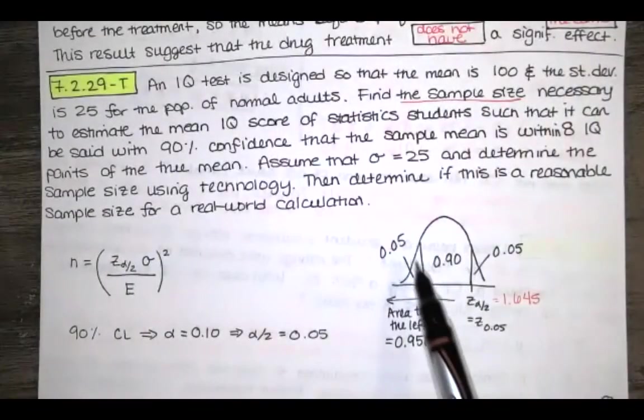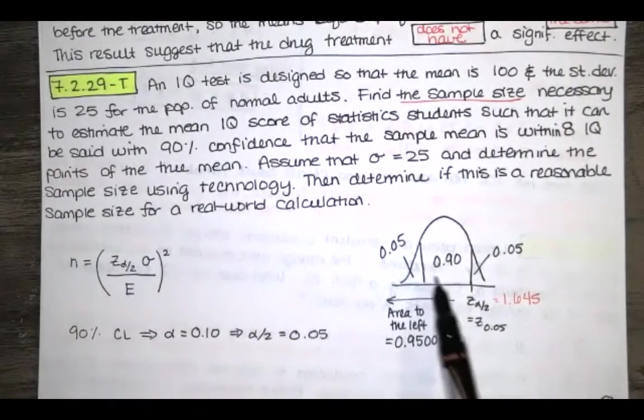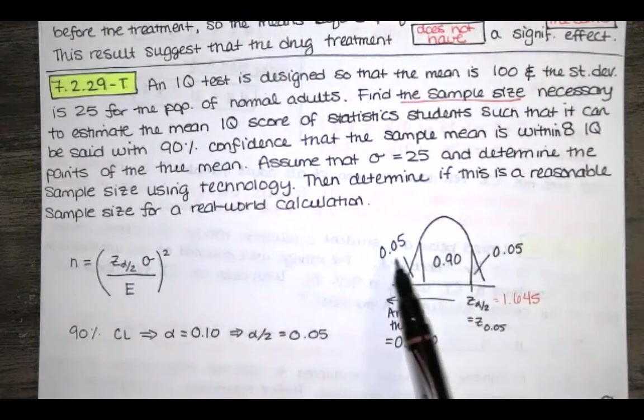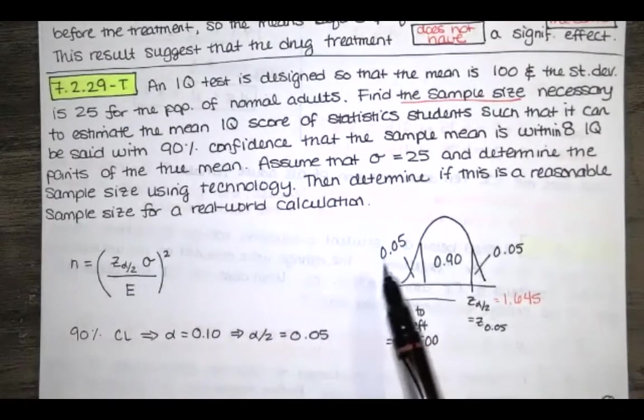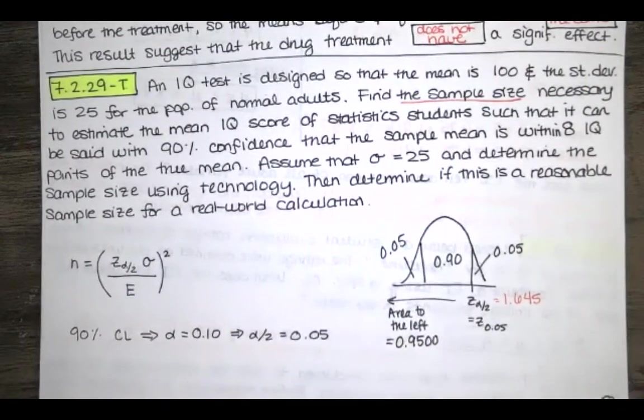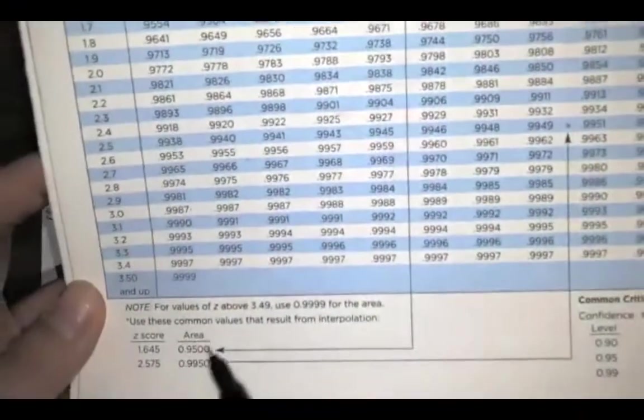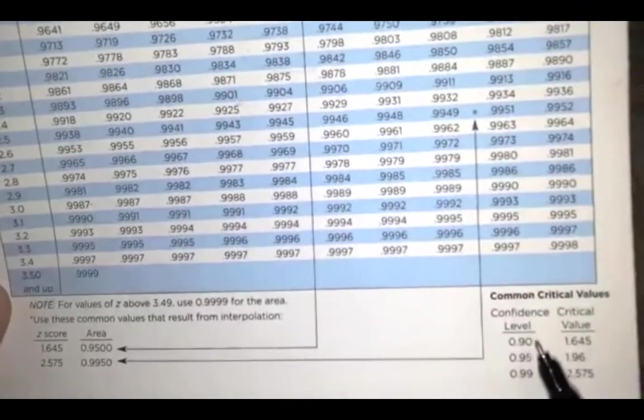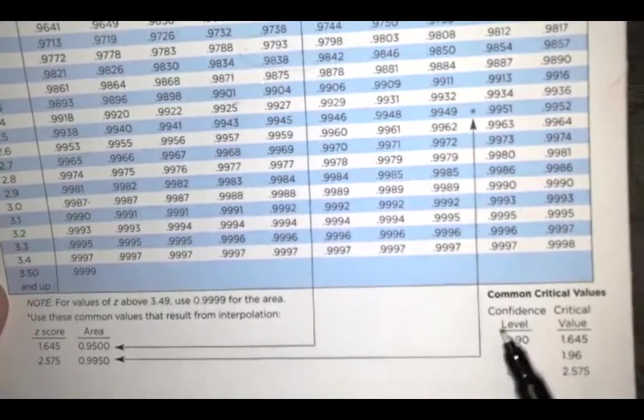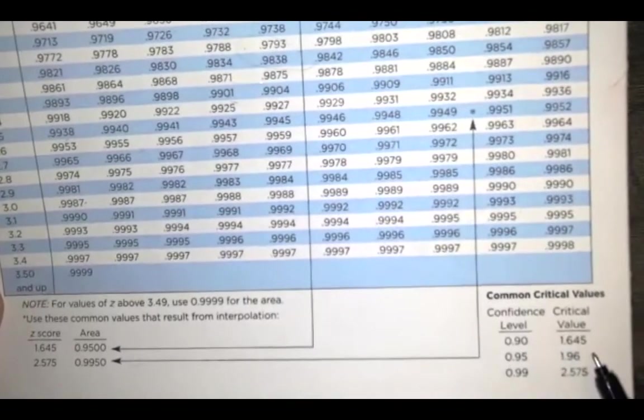That's because that 90% confidence interval takes the 90% in the middle, splits the remaining 10% into the two tails, and then the 90% plus the 5% gives you the 95%. So area to the left of 95% corresponds to that Z score, or 90% of the area in the middle corresponds to the same Z score.